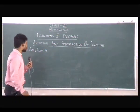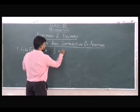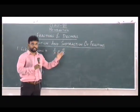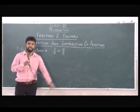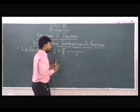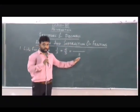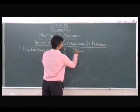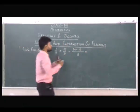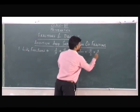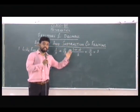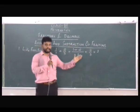Now when we have like fractions, for example, here we have 1 by 3 plus 2 by 3. These are like fractions. So in this case what we'll do is we'll take 3 as the denominator and add the numerators: 1 plus 2 gives you 3 by 3, which is equal to 1. So in case of like fractions, you simply add the numerators and the denominator remains the same.